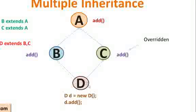...what happens is, because D has no implementation of its own add, obviously Java will start looking at the superclasses. B is also having the add method, and C is also having the add method. So this creates a confusion, and Java will not be able to take a decision from which it has to be executed.